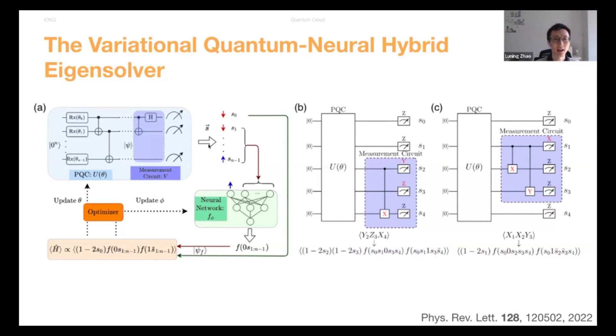And instead of measuring the energy directly on the quantum computer, the neural network is going to output the energy. And now you have two set of parameters. First is the set of parameters of your quantum circuit, and the second set of parameters will be the neural network parameters. And by optimizing these two set of parameters together, the neural network will be able to pick out the errors on the quantum computer and suppress those errors.